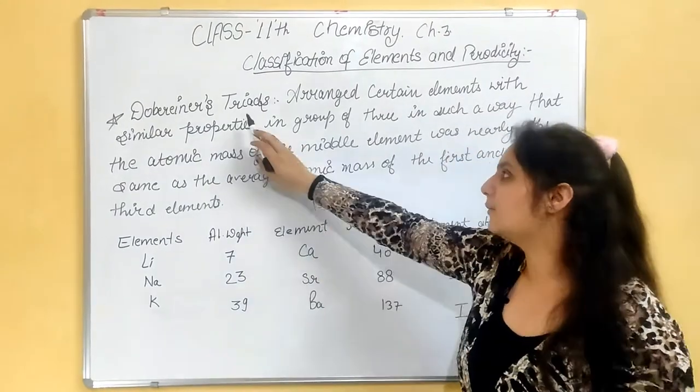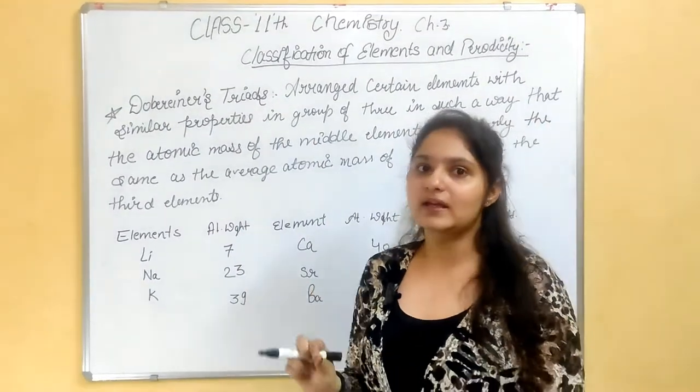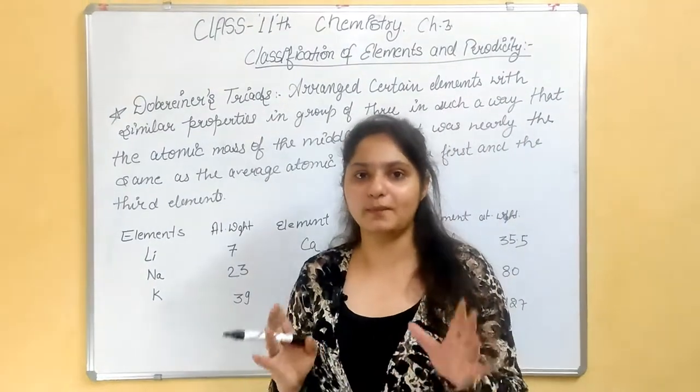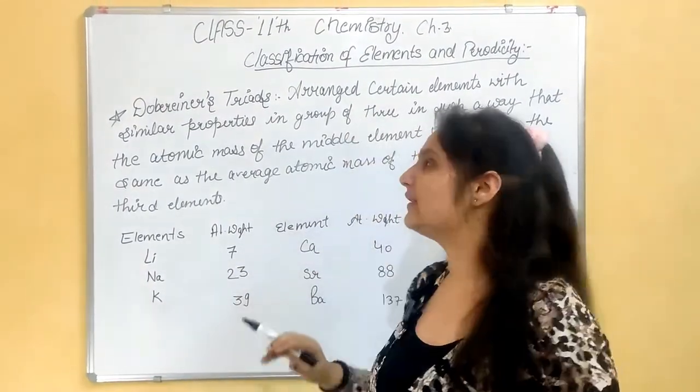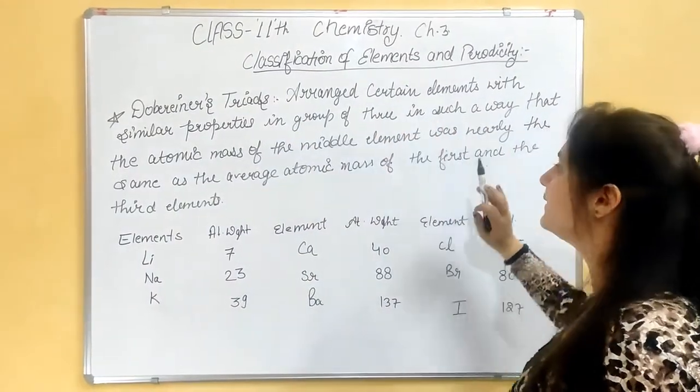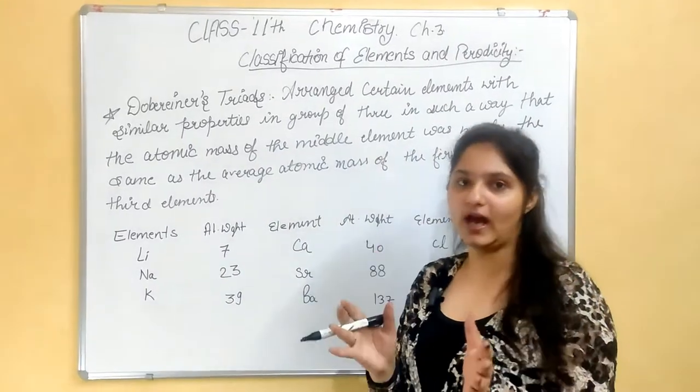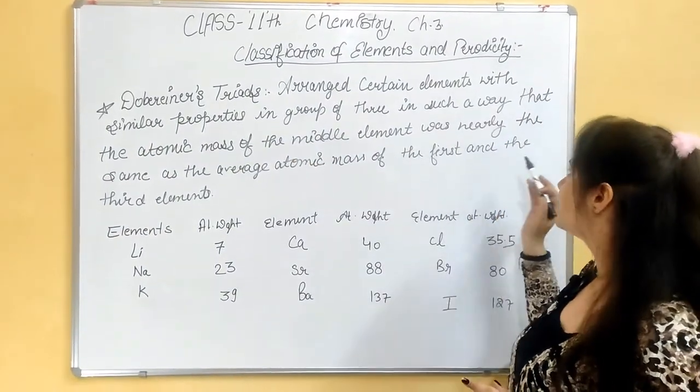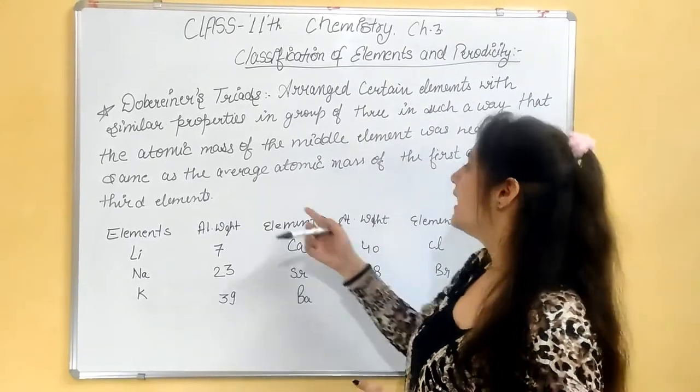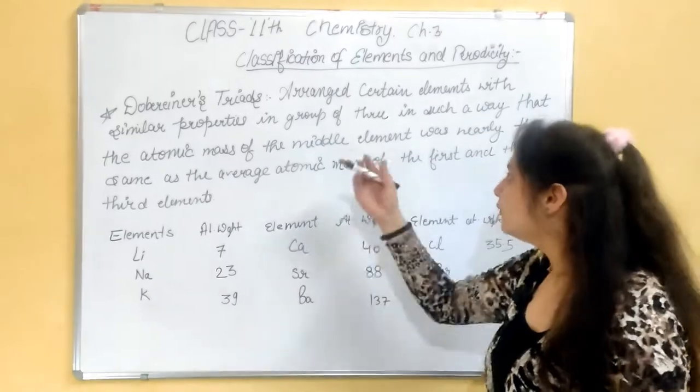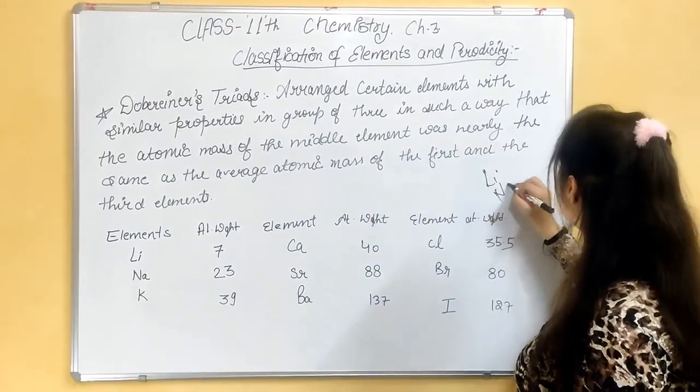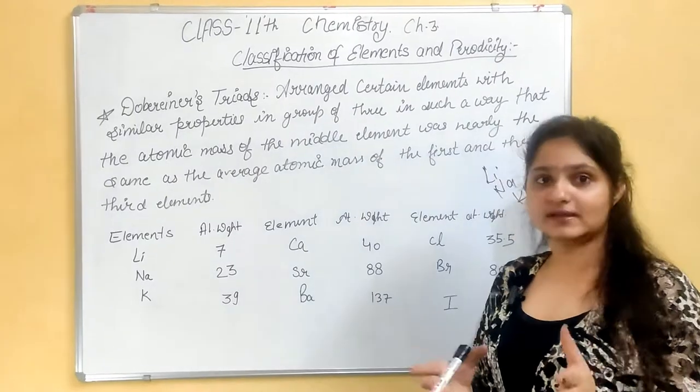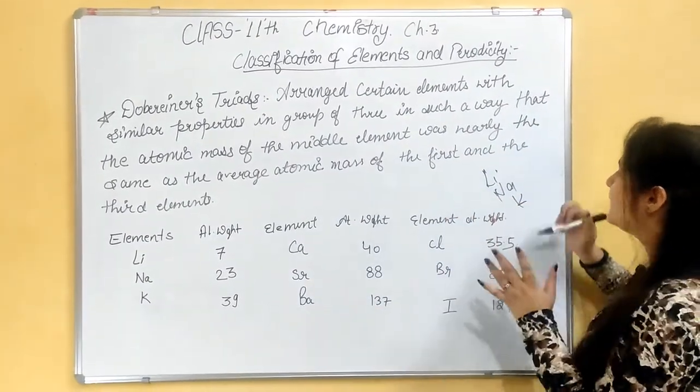The first law and first triad was made in 1829 by Dobereiner. He arranged certain elements with similar properties in groups of three in such a way that the atomic mass of the middle element was nearly the same as the average atomic mass of the first and the third element. He took elements with similar chemical or physical properties and arranged them in groups of three.